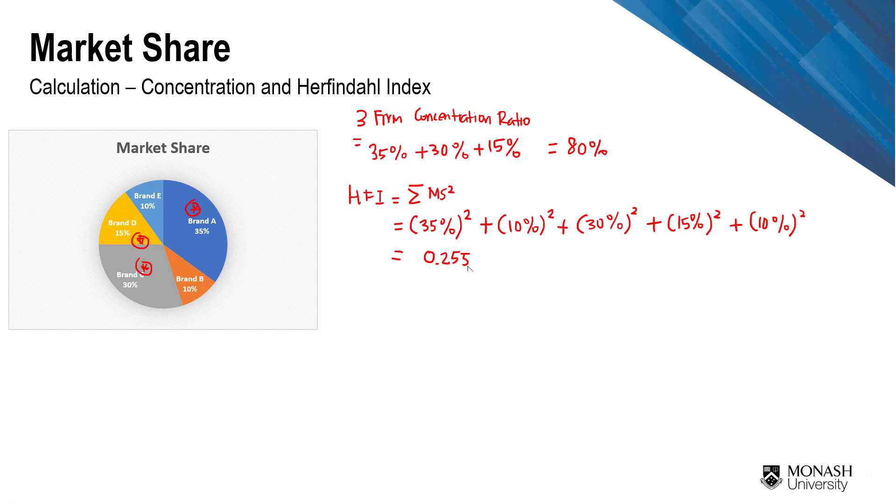Now I just want to give you a brief idea of how you punch this into your calculator. When you punch percentage into calculator, make sure you punch 35% as either 0.35, or you can punch 35% as 35 over 100. So it's up to you which one you prefer, but this is how you are actually going to count the Herfindahl index and concentration ratio.